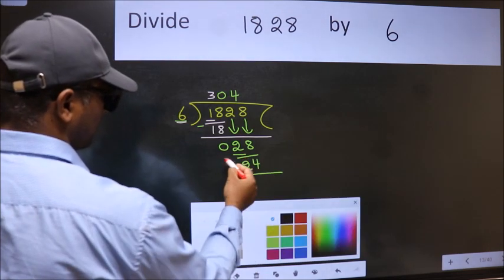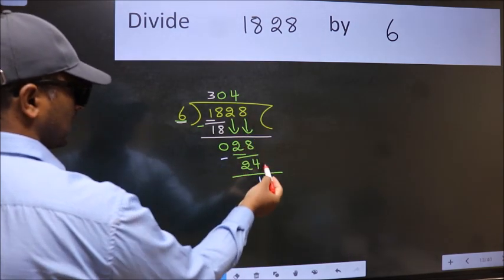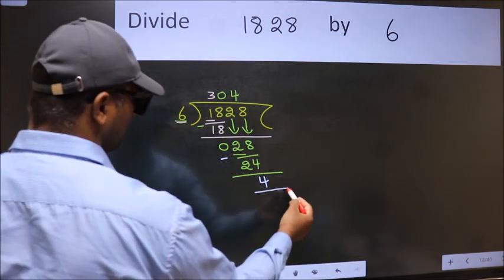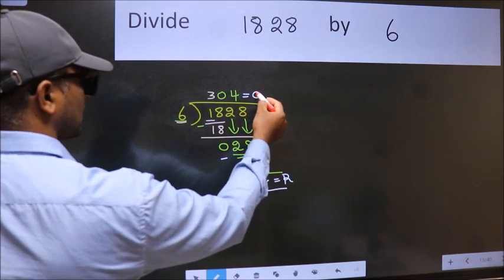Now, we subtract. We get 4. No more numbers to bring it down. So, we stop here. This is our remainder and this is our quotient.